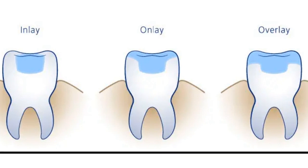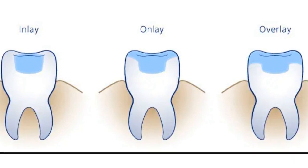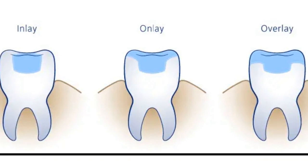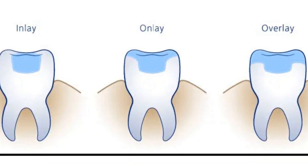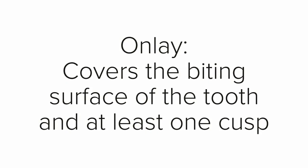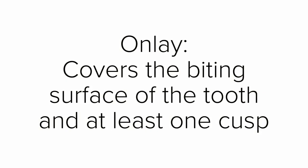An onlay covers like one cusp of the tooth — not both cusps — because if it covers both cusps it becomes an overlay, not an onlay. So an onlay covers the biting surface of the tooth and at least only one cusp.